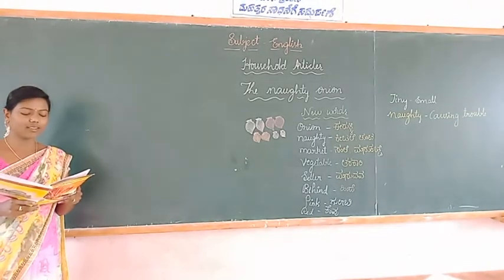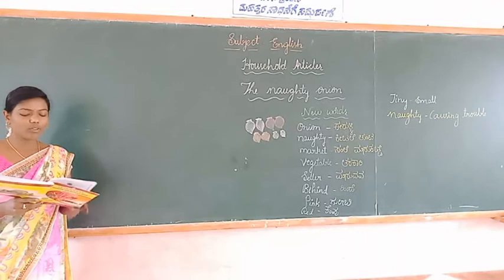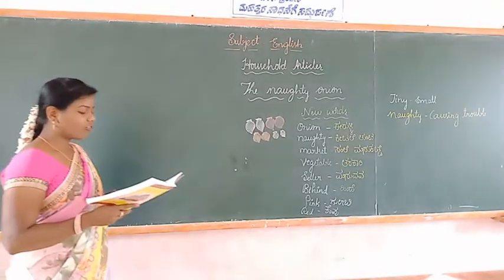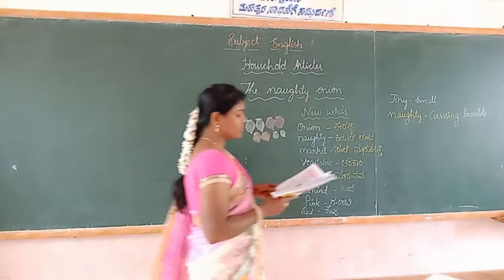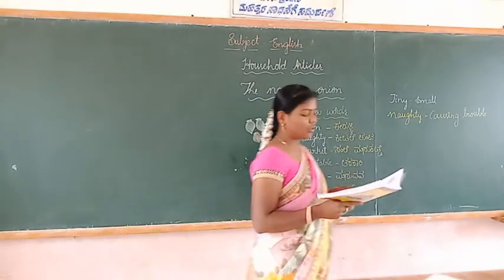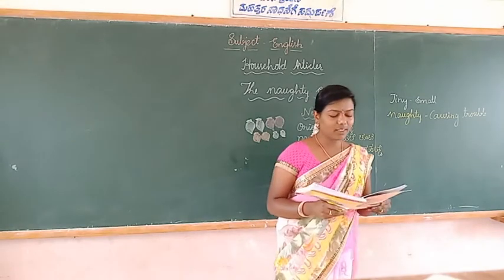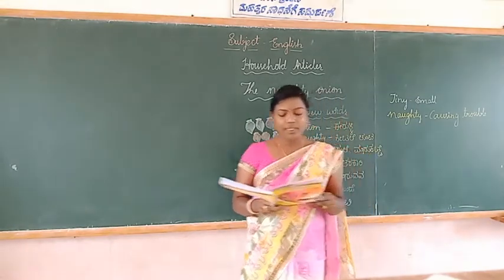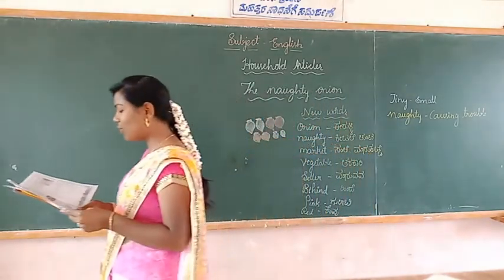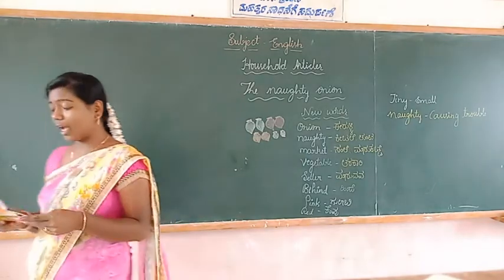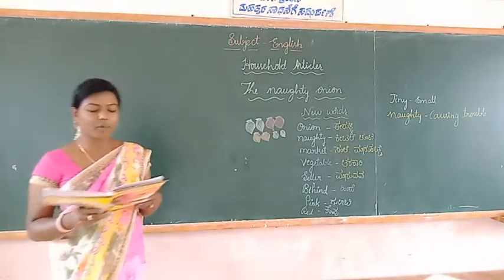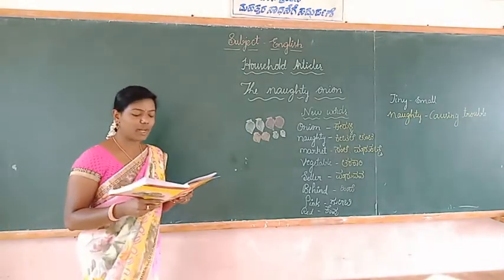He told the other onions to jump out of the pocket. Some went under the cupboard, some went into the corner, and some hid behind the dustbin. They went everywhere. The paper pocket was soon empty.